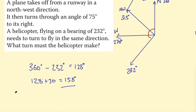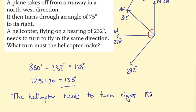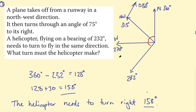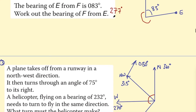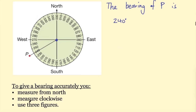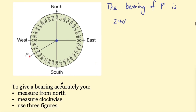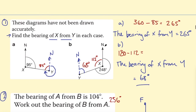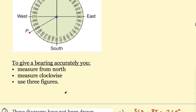To sum that up, the helicopter needs to turn right 158 degrees. All I really needed to answer those problems was knowing the three rules: measure from north, measure clockwise, and use three figures. As long as you master those three facts, you should be able to answer any bearings question. Bearings questions also often require using other aspects of geometry — like parallel lines — to reach the final answer.